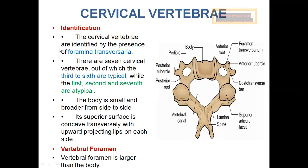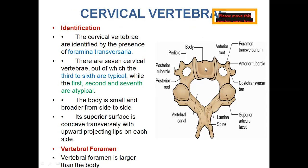Cervical vertebrae are identified by the presence of the foramen transversarium. We have seven cervical vertebrae, of which third to sixth are typical, and first, second, and seventh are atypical. The body is small and broader from side to side; its superior surface is concave transversely with projecting lips on either side. The big hole you are finding here is the vertebral foramen.